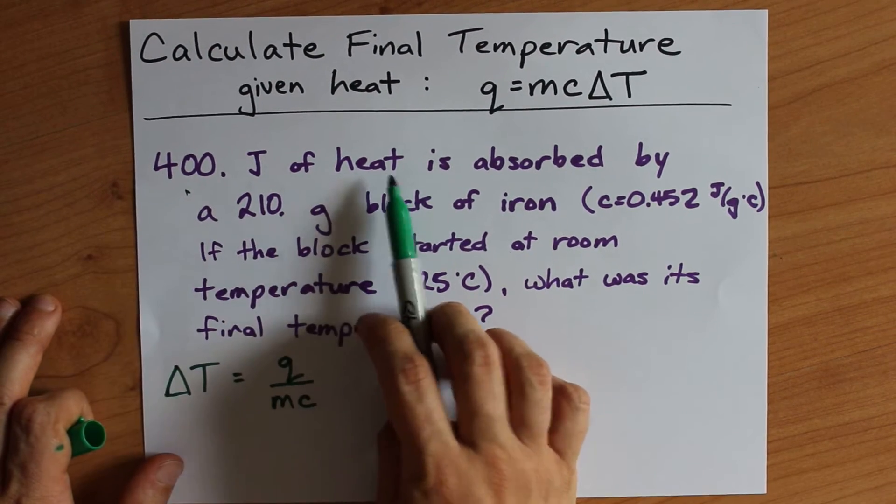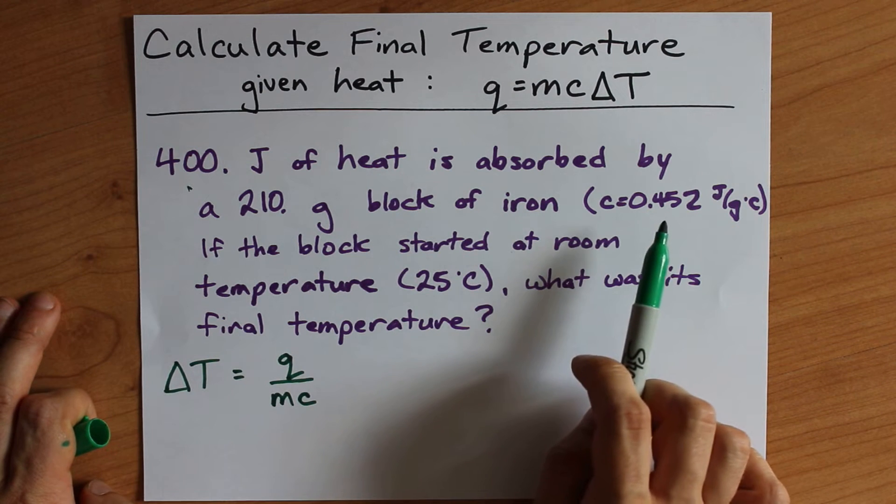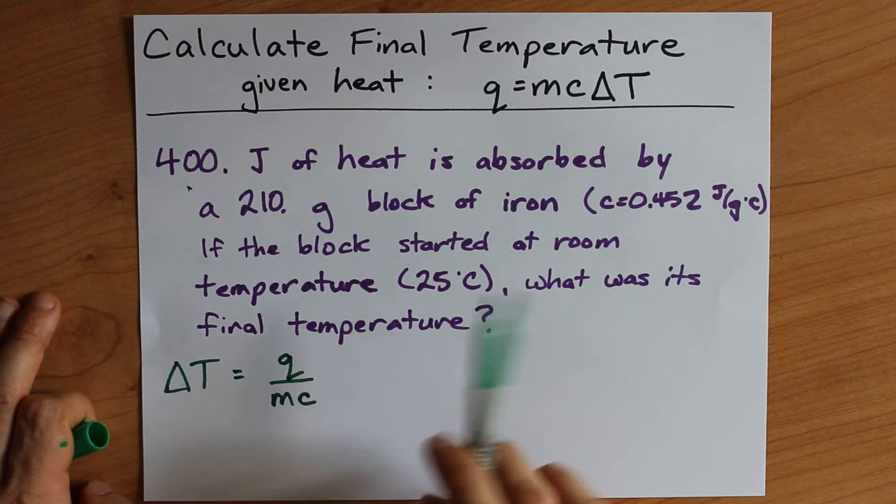if 400 joules of heat are put into a 210 gram block of iron with this specific heat capacity, what will the final temperature be?